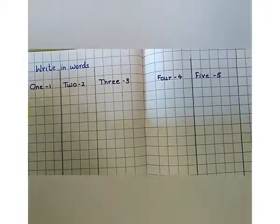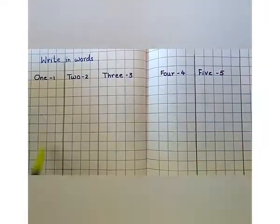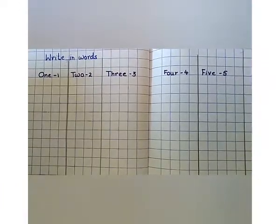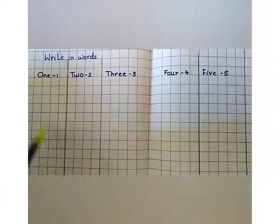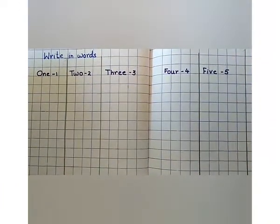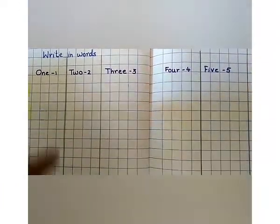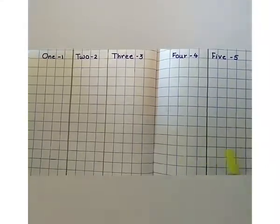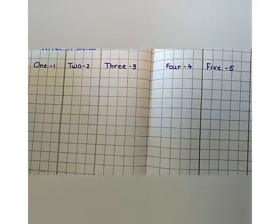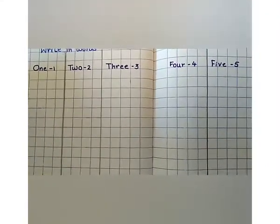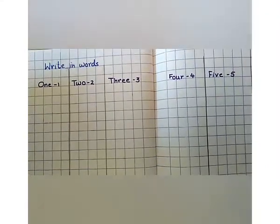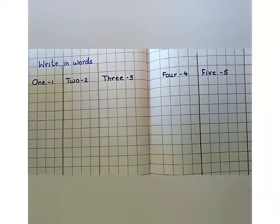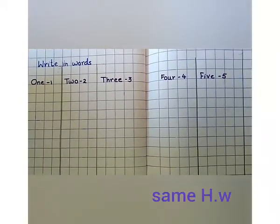Write the spelling off till here. You have to complete the line — all the lines — one, two, three, four and five. Till here, you have to complete. And do the same homework. Okay? Thank you.